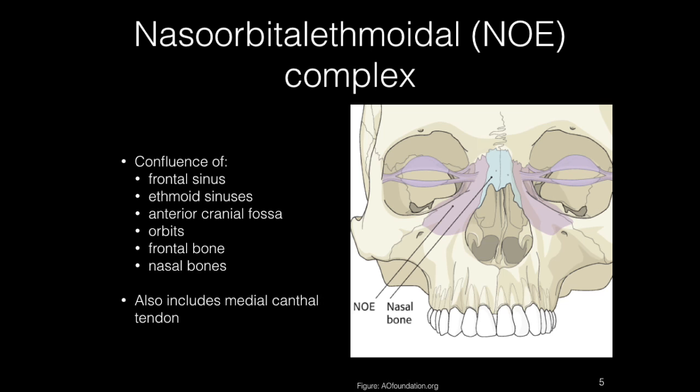By definition, nasal orbital ethmoidal complex fractures are a different entity than isolated nasal bone fractures; however, they are often associated with fractures of the nasal bones. The naso-orbital ethmoid complex is the confluence of the frontal sinus, ethmoid sinus, anterior cranial fossa, orbits, frontal bone, and nasal bones. The anatomy is intricate and injuries are one of the most challenging areas of facial reconstruction. It is very important to recognize nasal orbital ethmoidal injuries because untreated or inadequately repaired fractures often result in secondary deformities that are extremely difficult or impossible to correct.